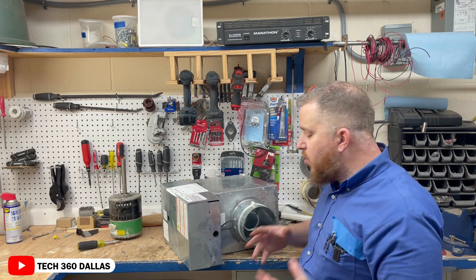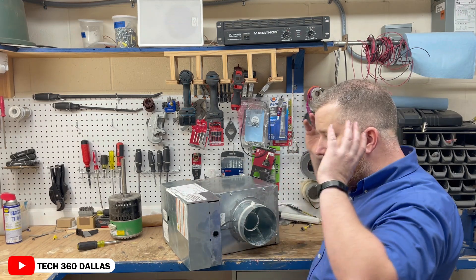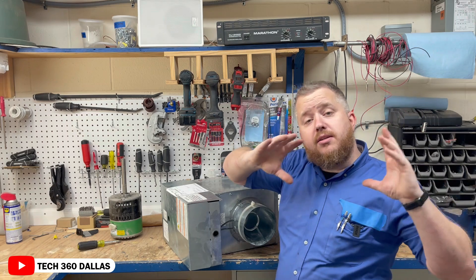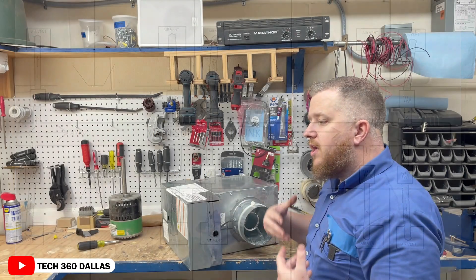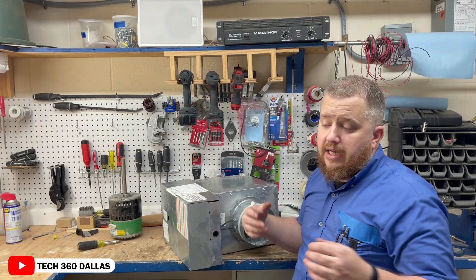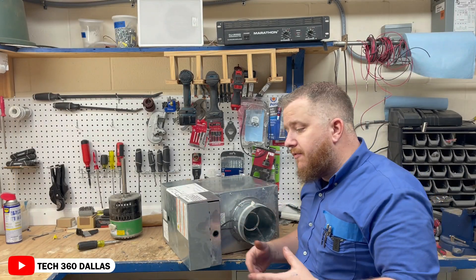Basically what it does: you have a main trunk, like a main air conditioner on that floor that feeds air through one long trunk, and you've got multiple offices all the way down. Instead of just having this thing dumping air all the time into those offices, you can have the main trunk line come off into one of these and then into the office space.